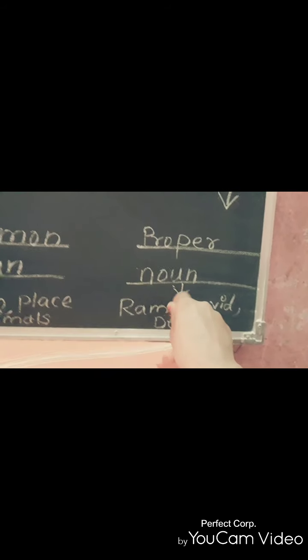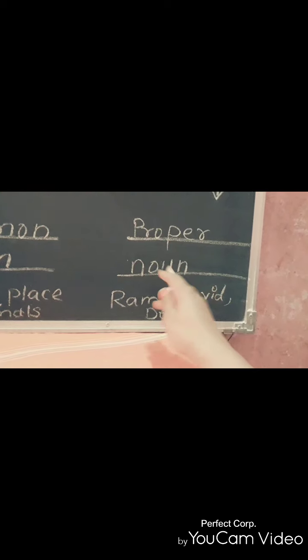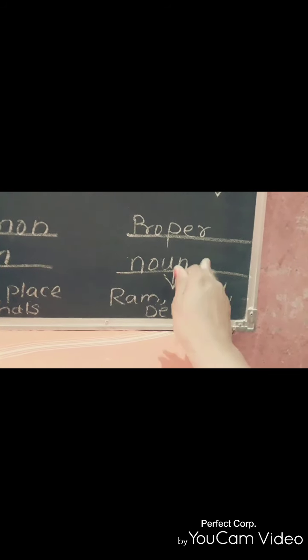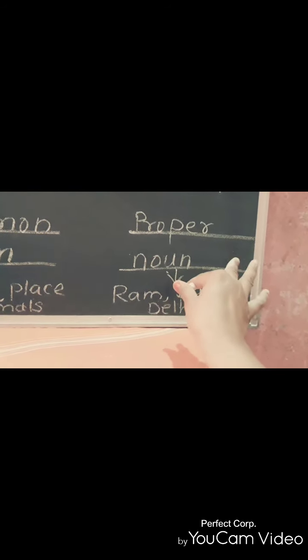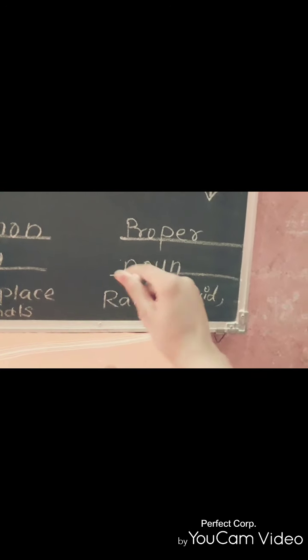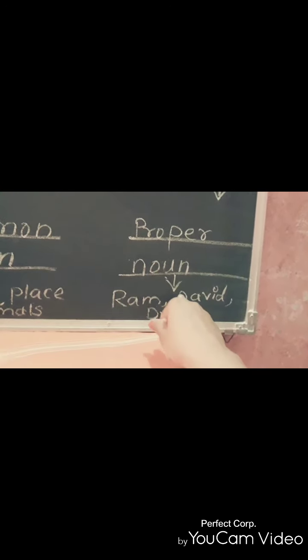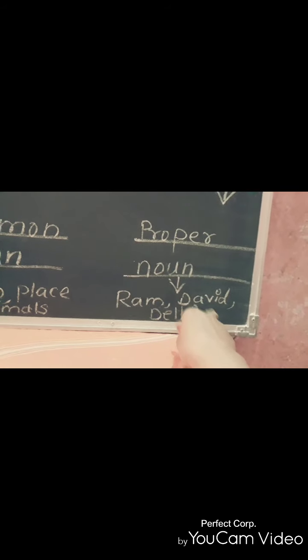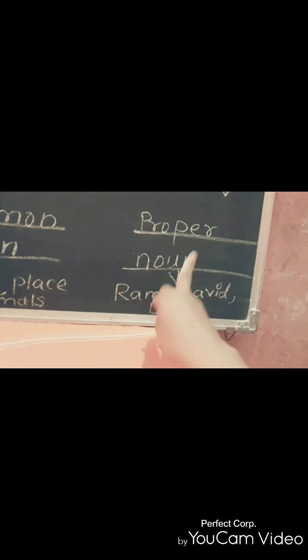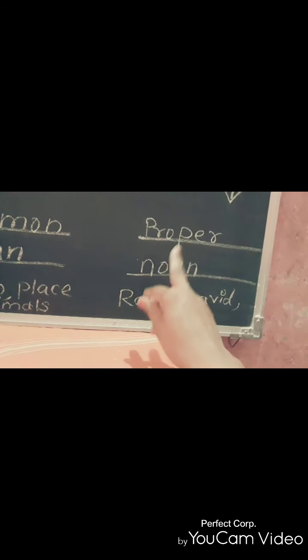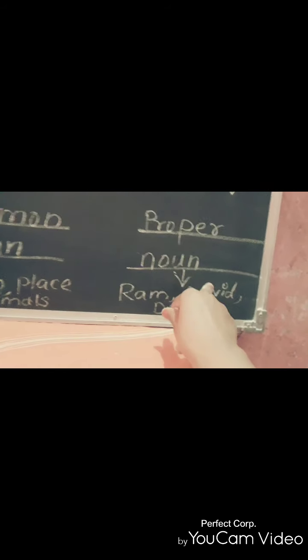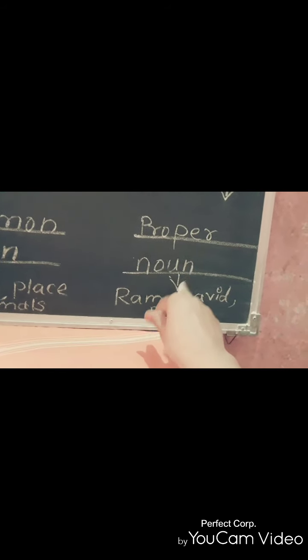And we are going to study about particular animals like cow, cat, dog, rat. In proper noun, we study about a particular fruit, particular vegetable, particular furniture, not types of furniture. This is the first part of noun.